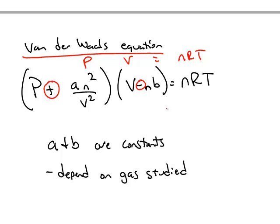A and B are constants in this van der Waals equation, and they're dependent on which gas you're studying. So in other words, you can look up the A and B factor for carbon dioxide. It's going to be different than A and B for neon or helium or argon.